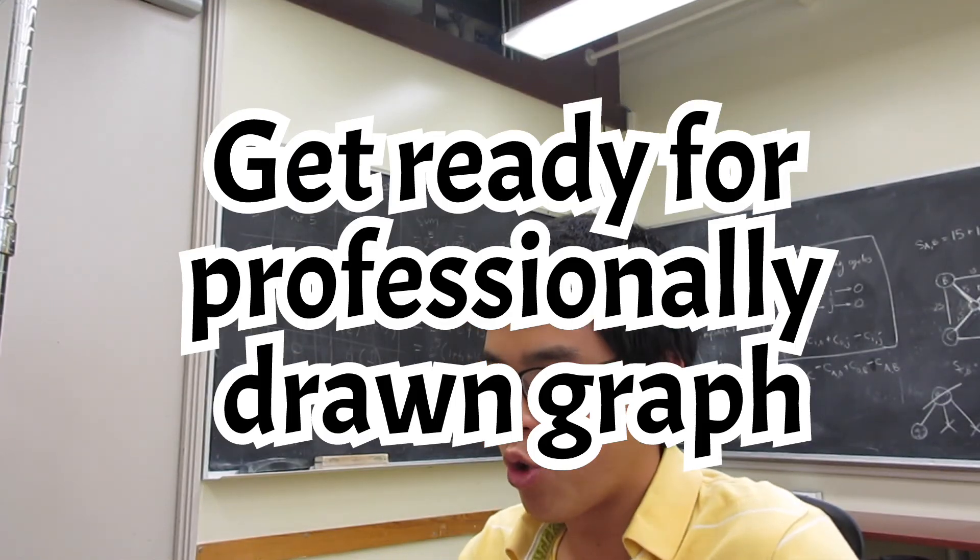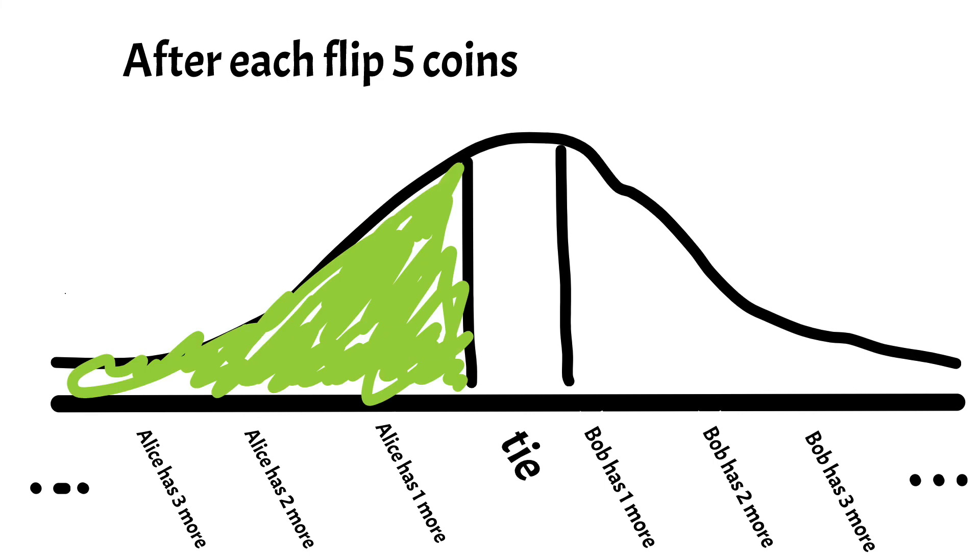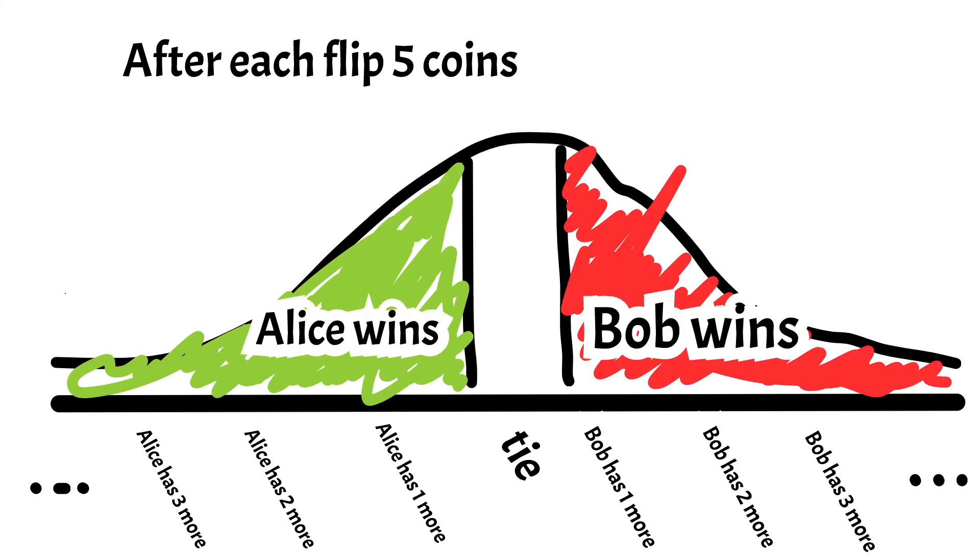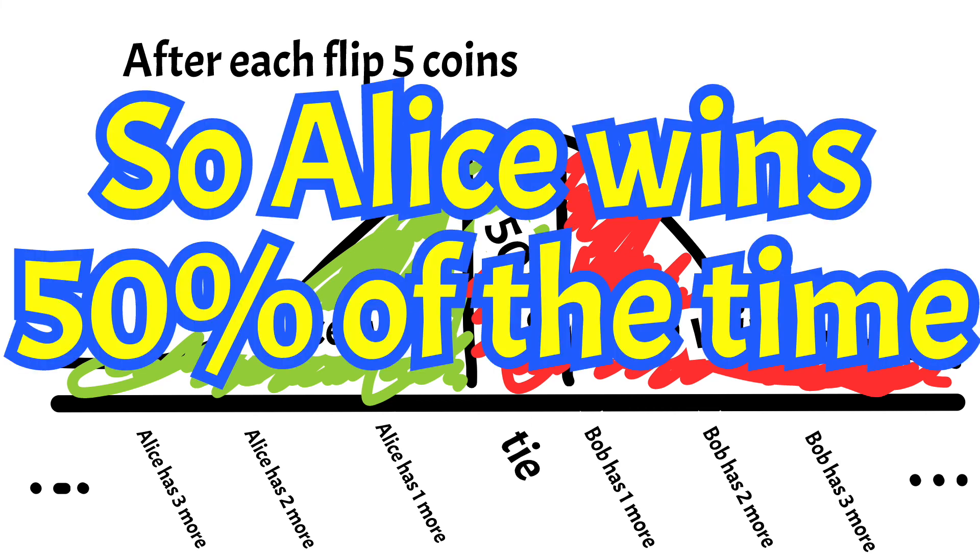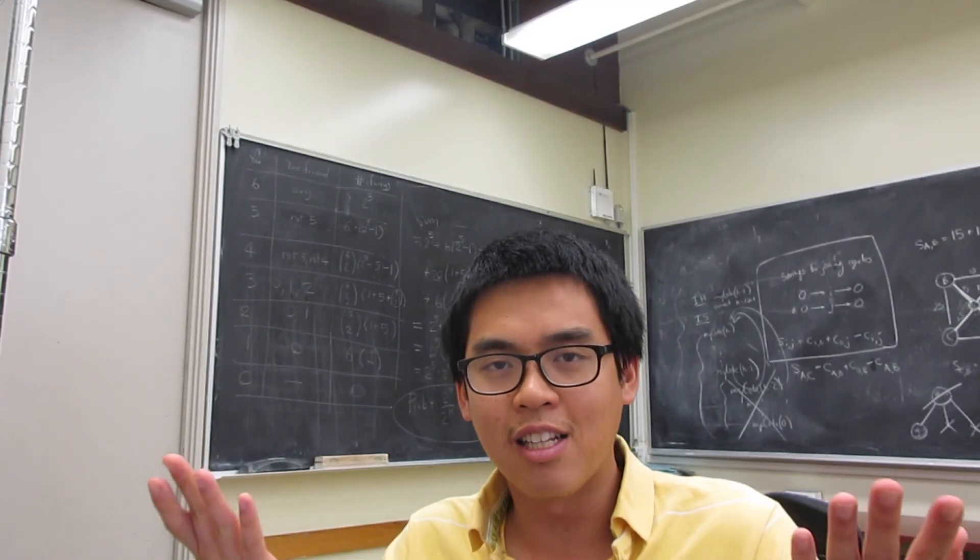So graphically, it can be shown this way. Alice wins if the results show up on the left side of the graph. Bob wins if the results show up on the right side of the graph. If the results show up in the middle part, then each has probability of one half to win. So each of them has the same probability to win. To me, that's a pretty nice and clean solution. Not much calculation required at all.